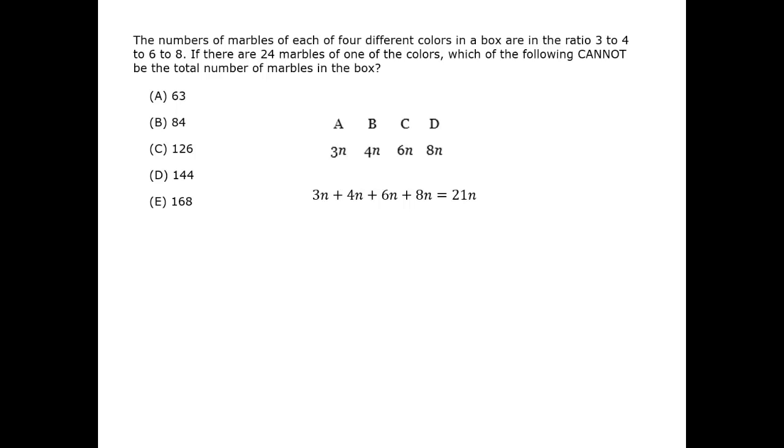The correct answer to this question will be a number that cannot be the total number of marbles in the box. Well, the total number for a valid case will have n as an integer and therefore will be divisible by 21. Since 21 equals 3 times 7, a valid case will be both divisible by 3 and by 7.